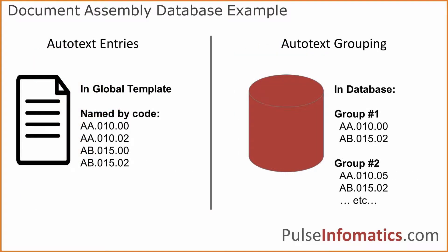Looking at the auto text entries, they have a two-character intro that specifies the section they're in, and then a three-digit classification that groups similar text together, and then an iteration of text as the final two digits — so 00, 02, 04 could be different iterations.